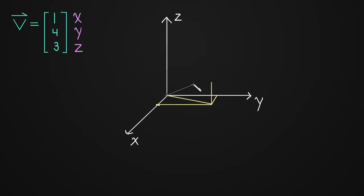So our vector moves 1 in x, 4 in y, and 3 in z. And there it is right there.